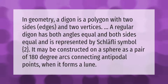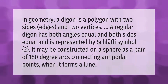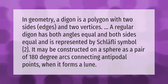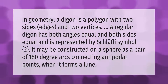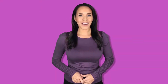In geometry, a digon is a polygon with two sides, edges, and two vertices. A regular digon has both angles equal and both sides equal, and is represented by the Schläfli symbol {2}. It may be constructed on a sphere as a pair of 180-degree arcs connecting antipodal points, when it forms a lune.